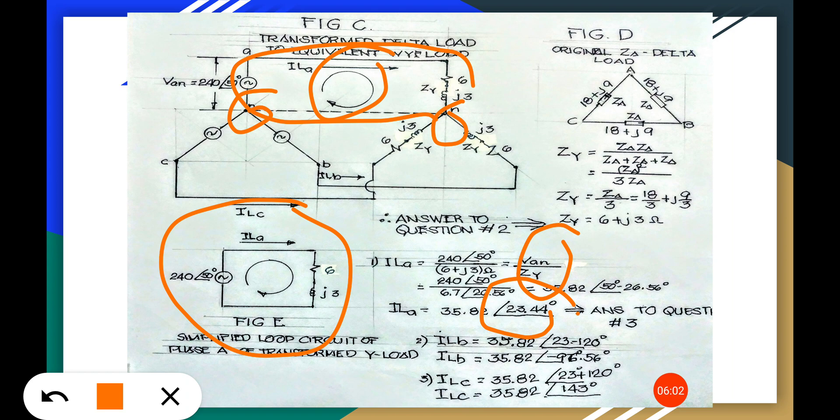So if you want to get this Irb you just have to minus the 120 degrees, that's the phase shift angle because they are balanced load.